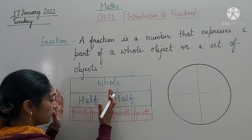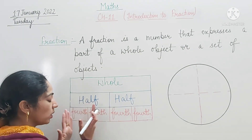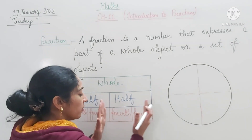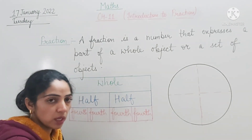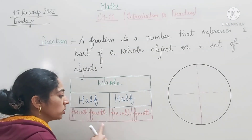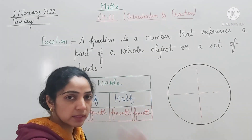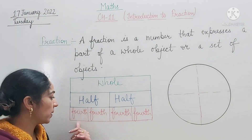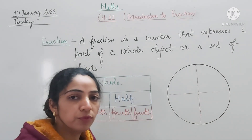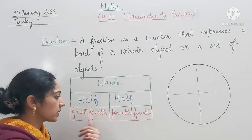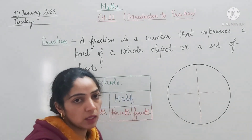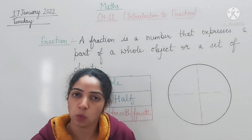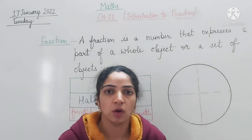We divide each half into two equal halves again, so total we get four parts. One, two, three and four. All parts are equal. In fractions, all parts must be equally divided.